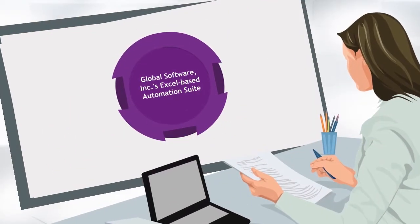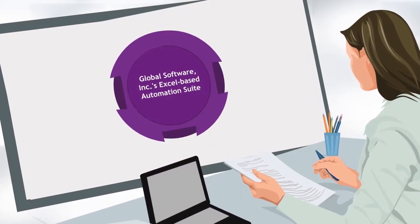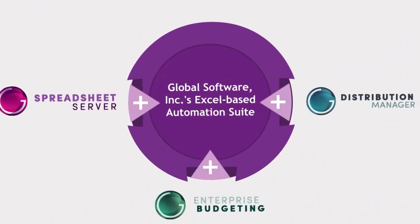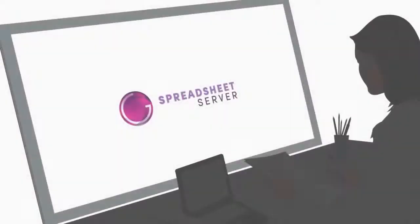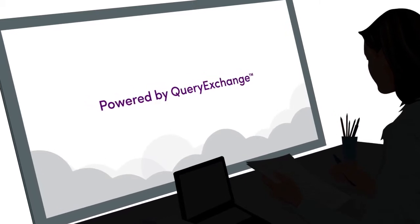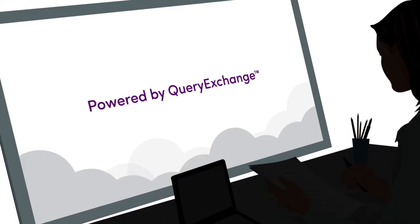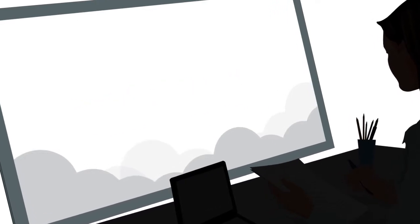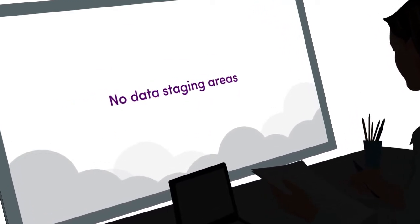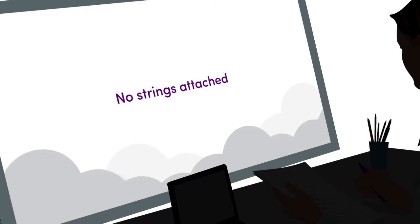Global Software Incorporated's Excel-based automation suite is made up of three components. Spreadsheet Server, powered by Query Exchange, provides access to all of your data in Excel, SAP ERP, HANA and beyond. This means no data staging areas, no data cubes, no strings attached for you.